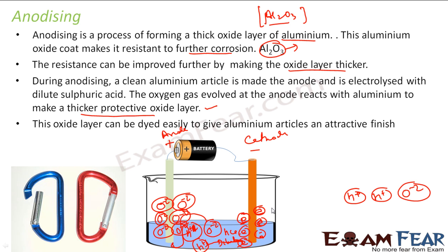Sometimes, in this dilute acid solution we add some dye — a colour. What happens is that the Al2O3 layer that forms also takes on that colour, because the oxygen ions carry the dye along as the reaction occurs. So the aluminium gets a thin colour coating, which makes it look good. This is used when you want to make the aluminium look green, pink, or blue — you add the dye to the dilute acid solution, and that colour becomes part of the Al2O3 layer that is created.